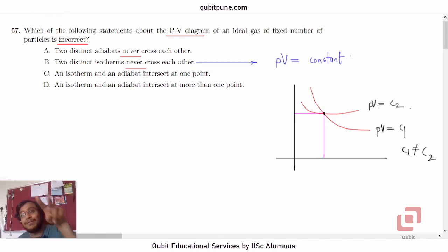Or value, two different values, two unequal values for the product of the same pair of real numbers. So, PV equal to C2 and PV equal to C1 is not going to happen. It is either PV equal to C2 or PV equal to C1 or none. Both cannot be true. So, two distinct isotherms never cross each other is actually a correct statement.